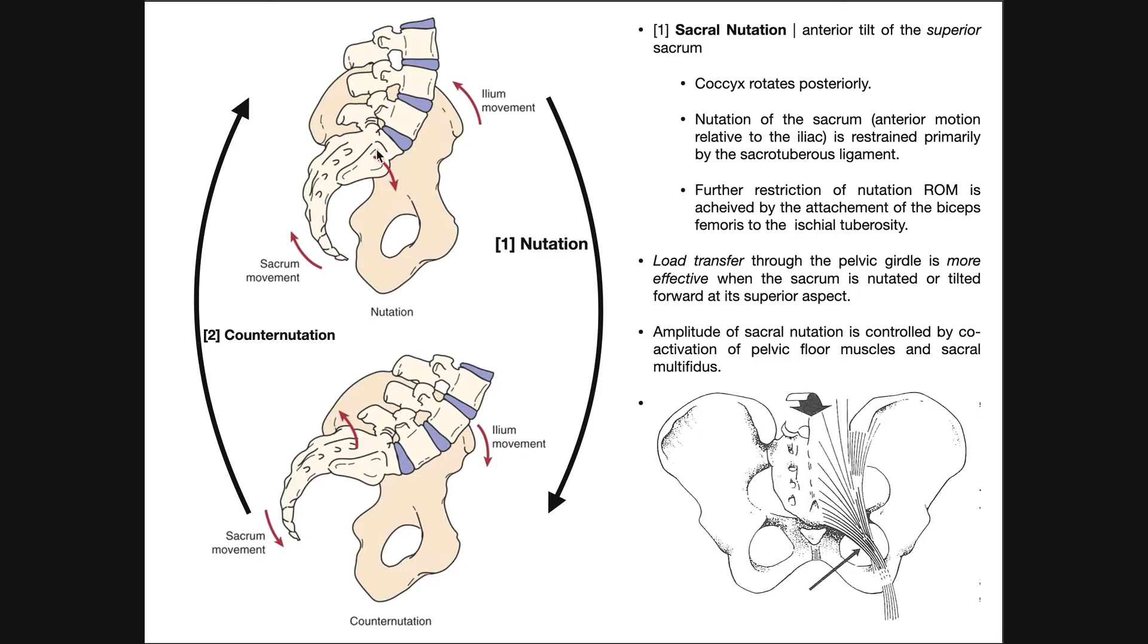But the point is if we take the superior surface of the sacrum and rotate it anteriorly, that also means take the inferior surface of the sacrum and rotate it posteriorly. So imagine taking the sacrum and rotating it like these arrows show. That movement is nutation, and you'd get something like this. So right here, this is in the nutated state.